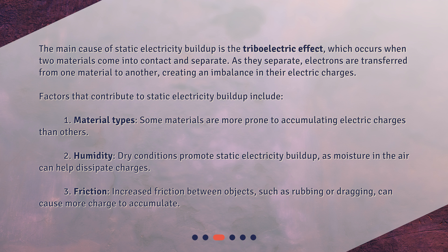Factors that contribute to static electricity buildup include: 1. Material types — some materials are more prone to accumulating electric charges than others. 2. Humidity — dry conditions promote static electricity buildup, as moisture in the air can help dissipate charges. 3. Friction — increased friction between objects, such as rubbing or dragging, can cause more charge to accumulate.